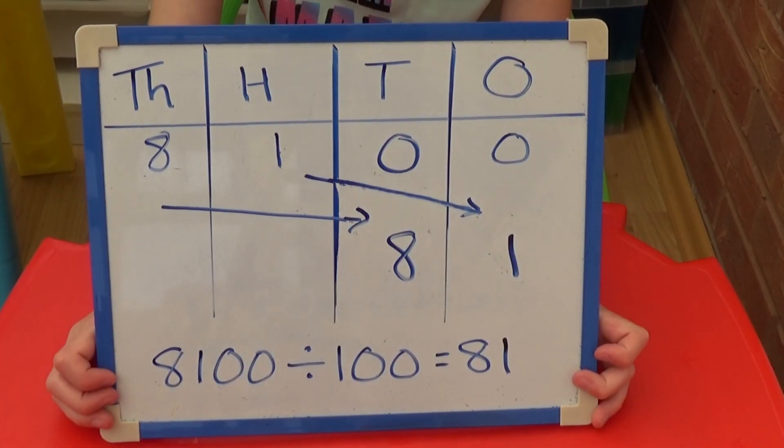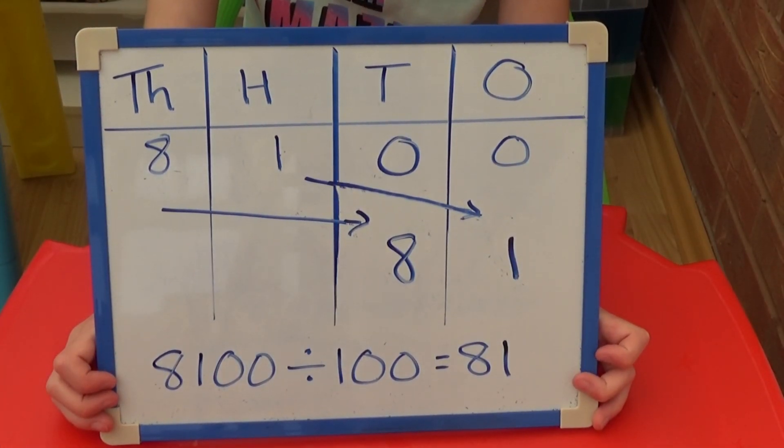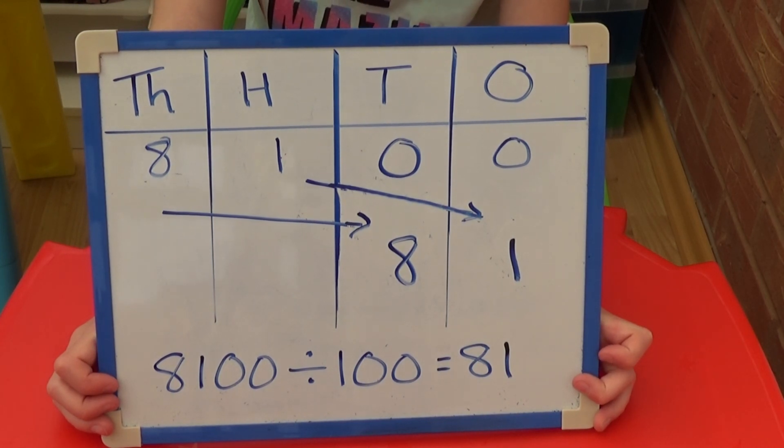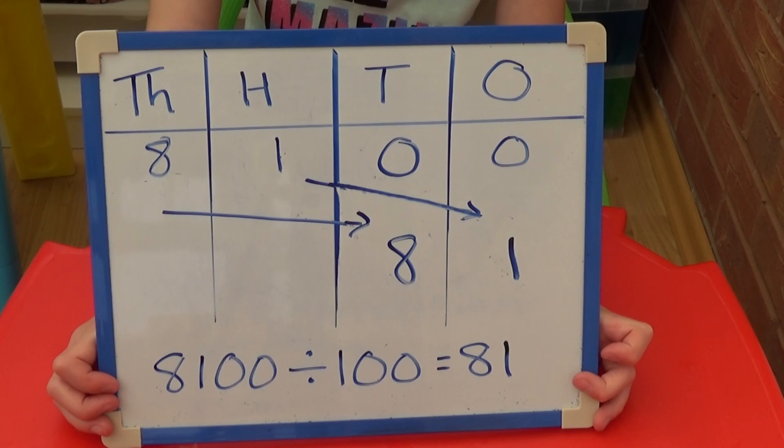For 8,100 divided by 100, each digit moves two columns to the right, so the 8,000 becomes eight tens, the 100 becomes one one, and we no longer need the two zeros. So 8,100 divided by 100 equals 81.